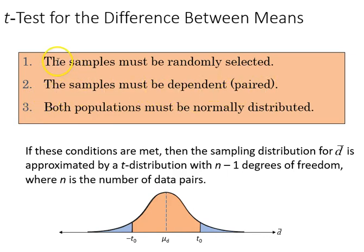Though the samples are dependent, we still assume that they are randomly selected and that their populations are normally distributed. Based on that, the t distribution is appropriate with n minus one degrees of freedom.